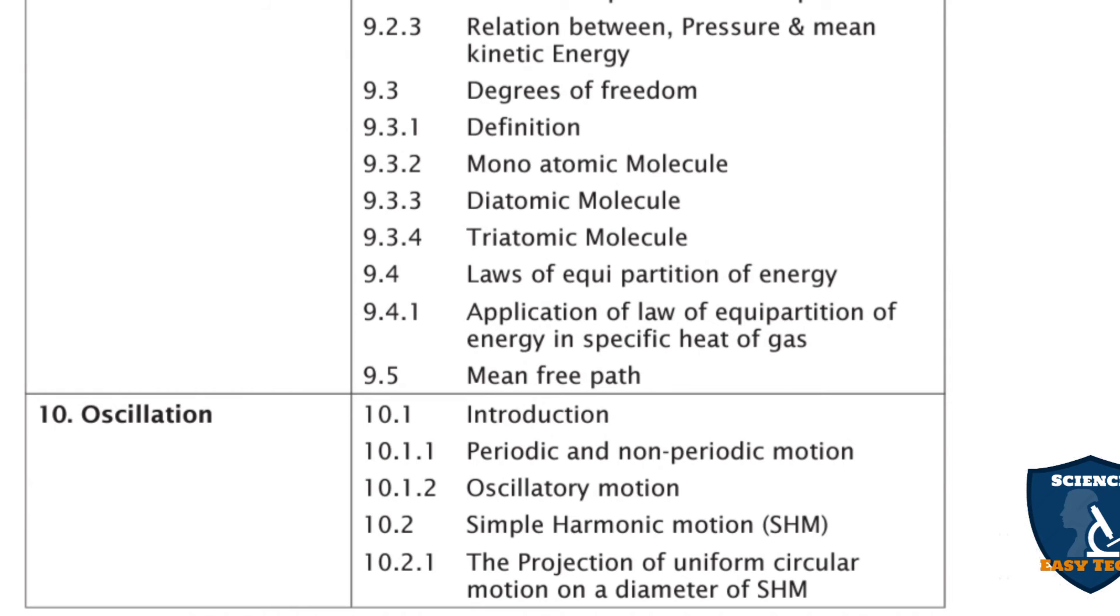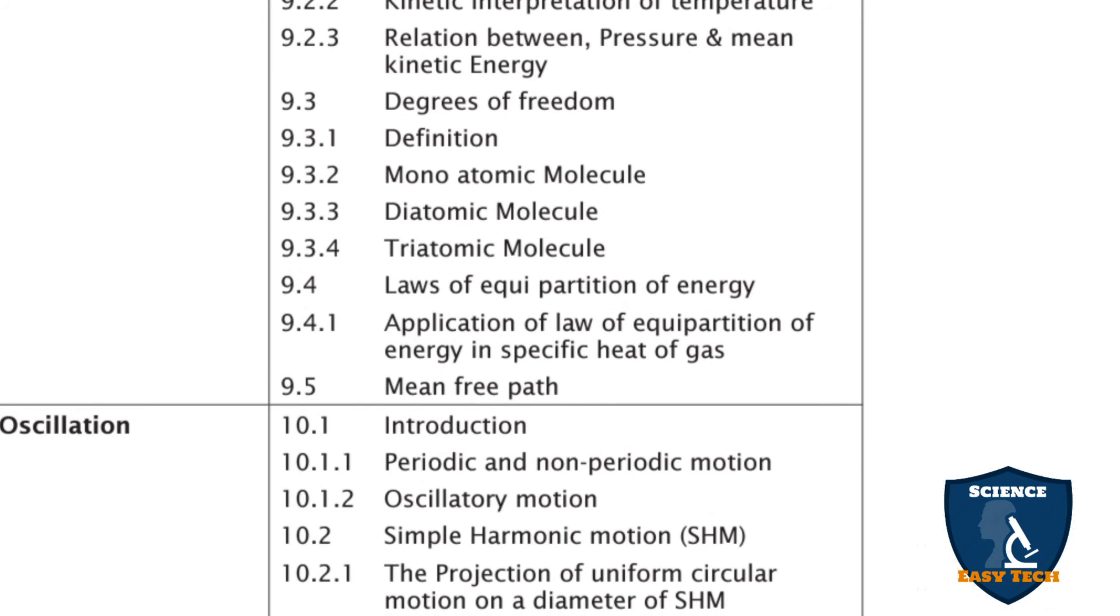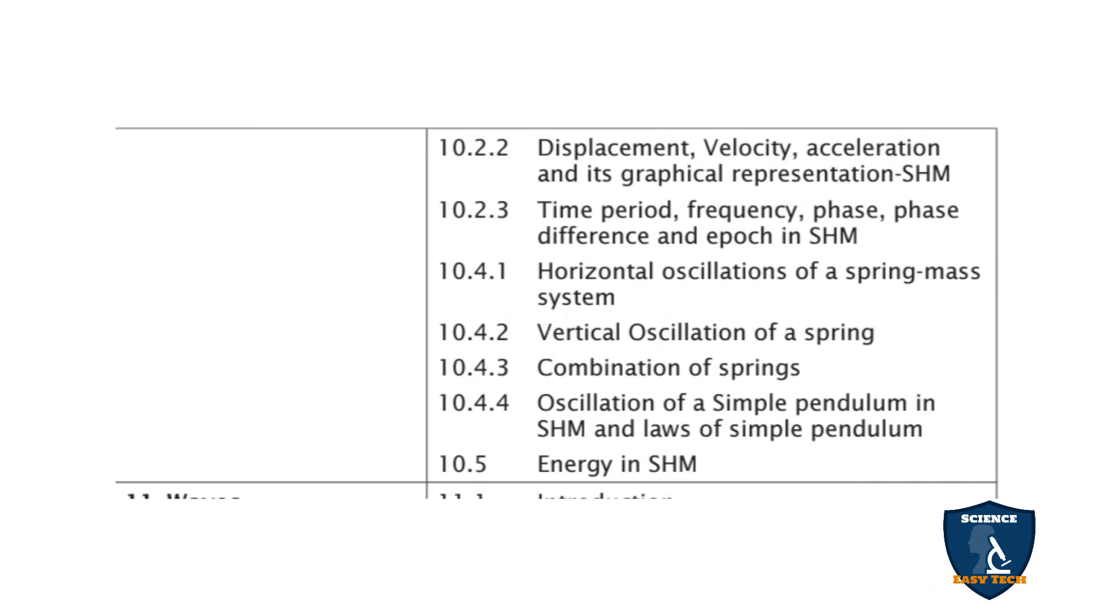Chapter 10: Oscillations. 10.1 Introduction, 10.1.1 Periodic and Non-Periodic Motion, 10.1.2 Oscillatory Motion, 10.2 Simple Harmonic Motion, 10.2.1 The Projection of Uniform Circular Motion on a Diameter is SHM, 10.2.2 Displacement, Velocity, Acceleration and Its Graphical Representation in SHM, 10.2.3 Time Period, Frequency, Phase, Phase Difference and Epoch in SHM, 10.4.1 Horizontal Oscillation of a Spring-Mass System, 10.4.2 Vertical Oscillation of a Spring, 10.4.3 Combination of Springs, 10.4.4 Oscillation of a Simple Pendulum in SHM and Laws of Simple Pendulum, 10.5 Energy in SHM.